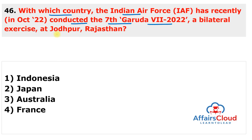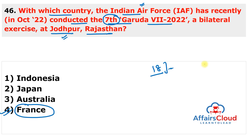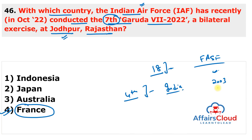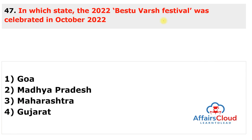Next question: with which country did the Indian Air Force recently conduct Garuda VII 2022, a bilateral exercise at Jodhpur, Rajasthan? The answer is France. Garuda VII is an 18-day long bilateral exercise between the Indian Air Force and the French Air and Space Force, held at Air Force Station Jodhpur, Rajasthan. This is the seventh edition. It is the fourth time this exercise was hosted by India — previously in 2003, 2006, and 2014 at air force stations of Gwalior, West Bengal, and Jodhpur respectively. Garuda is an air force exercise between India and France.